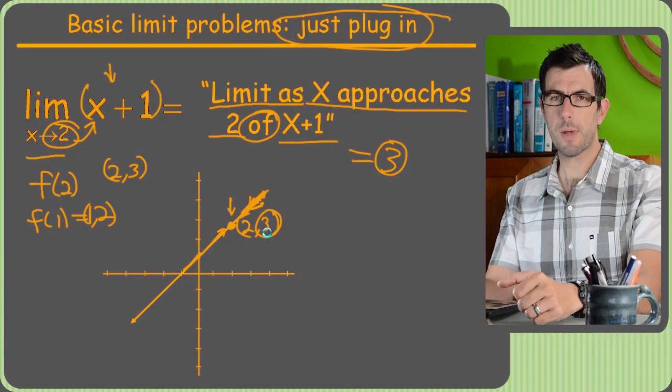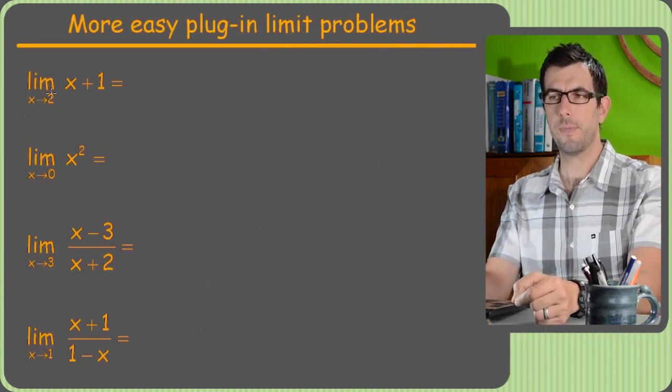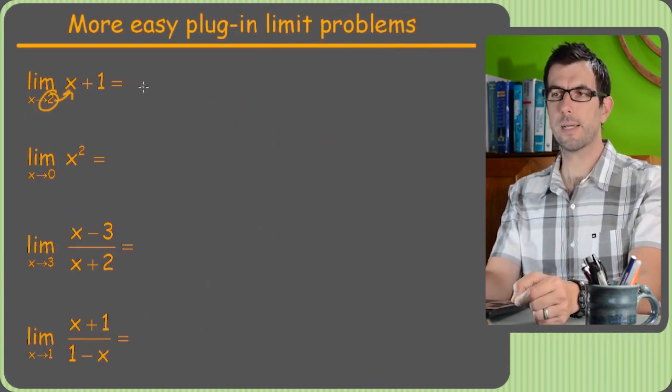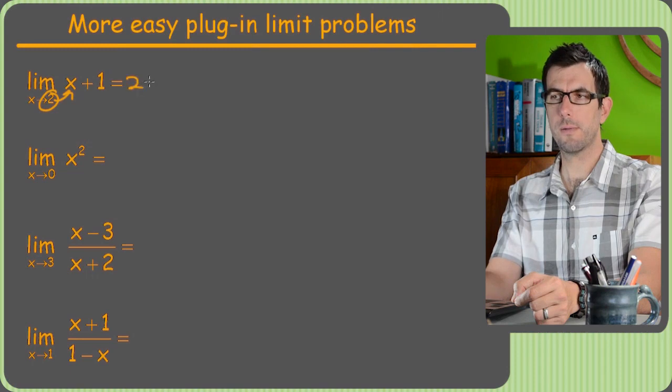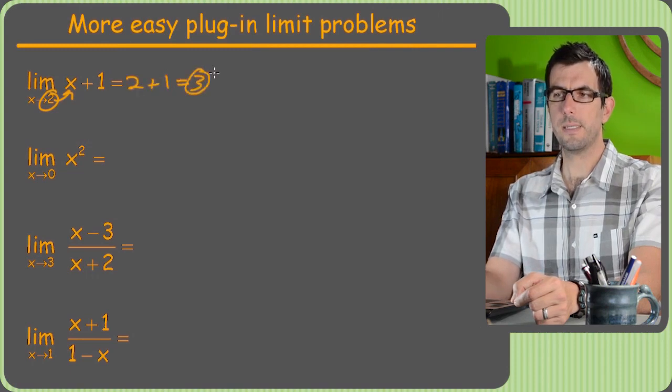The limit as X approaches 2 of X plus 1 is 3. And the reason that was so simple is because this is just a line. It's no big deal. We'll get into some wacky stuff later. Like later in this video, I'll show you some of the wacky types of problems we'll be looking at in later videos. But this is a really basic one. It was just a line. So yeah, the limit's just going to be that point. But the most basic way to solve all these problems is just plug in the number. So here's that same number again, plug in 2 for X, and we get 2 plus 1 is 3. Easy peasy.